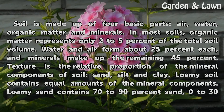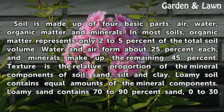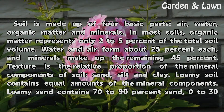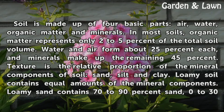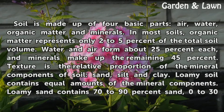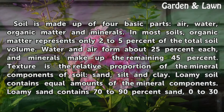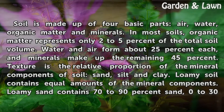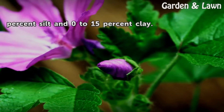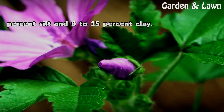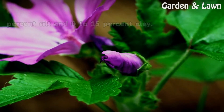Texture is the relative proportion of the mineral components of soil: sand, silt, and clay. Lomi soil contains equal amounts of the mineral components. Lomi sand contains 70–90% sand, 0–30% silt, and 0–15% clay.